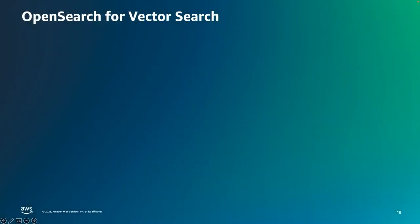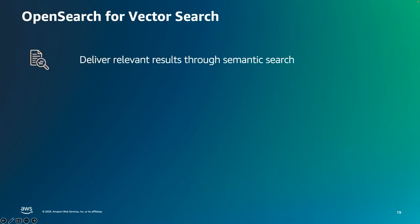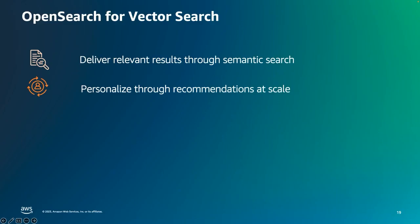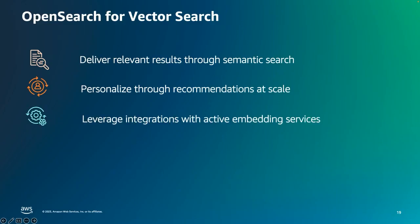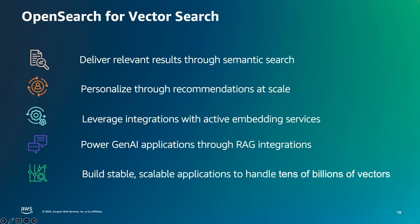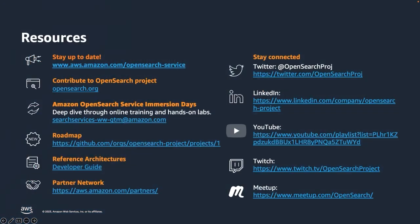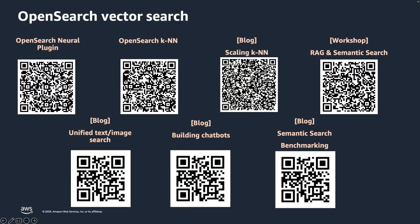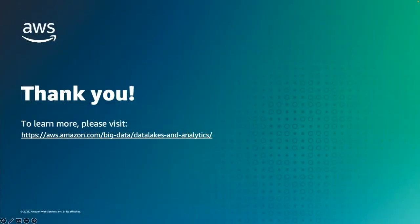Here's a quick recap. Use OpenSearch for vector search to deliver relevant results through semantic search, personalize through recommendations at scale, leverage integrations with active embedding services, power generative AI applications through RAG integrations, and build stable, scalable applications to handle tens of millions of vectors. Here are a few additional resources to help you get started with various flavors of OpenSearch, including references for workshops and blogs around vector search. Thank you for your interest in OpenSearch. Happy learning.